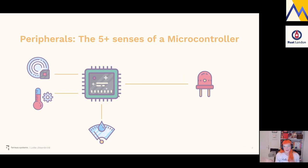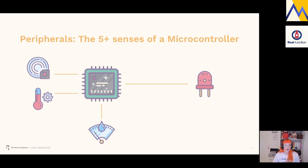Peripherals are anything we attach to the microcontroller to help it interact with the world. Since we can't sit in front of our little computer and type instructions, it needs to figure out what's going on and react appropriately. Peripherals can be output devices like an LED, or input devices like a temperature sensor. They're all connected to the microcontroller through pins, where current flows to control them and read their state. The microcontroller's task is to configure and react to them — and how we do that exactly is what Wouter will now explain.